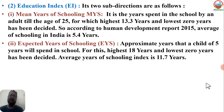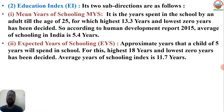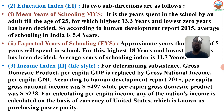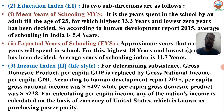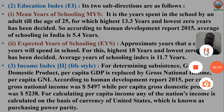The second sub-parameter is Expected Years of Schooling - the approximate years that a child of 5 years will spend in school. For this, the highest is 18 years and lowest is 0 years. The average expected years of schooling in India as per the 2015 HDI report is 11.7 years.